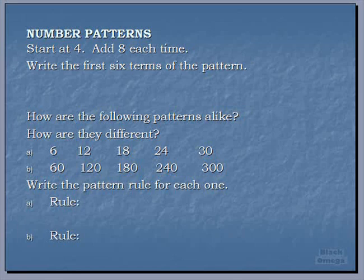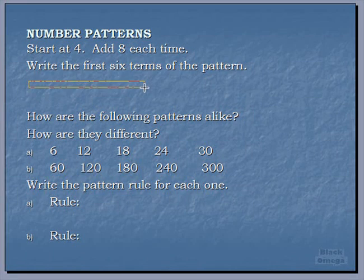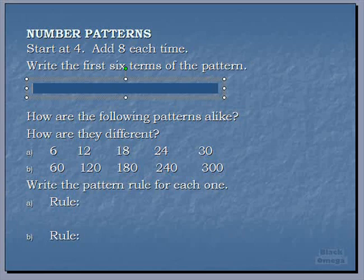We're going to start at the number 4. This is how we describe our number patterns: we start at 4 and add 8 each time to create our pattern. I'm going to put a text box here and we want to write the first six terms of the pattern.